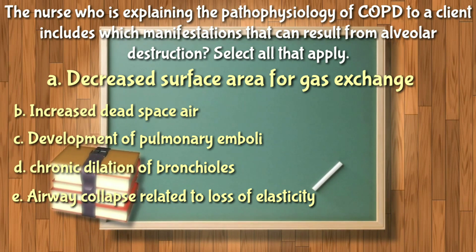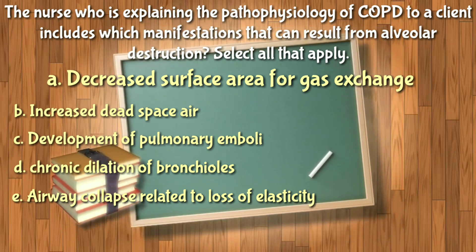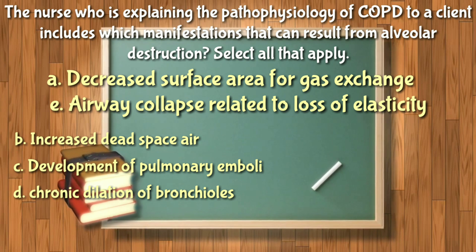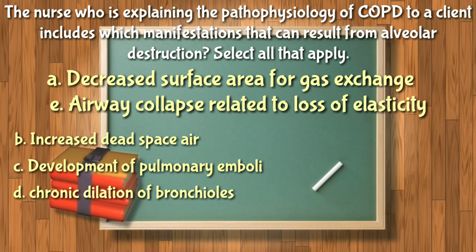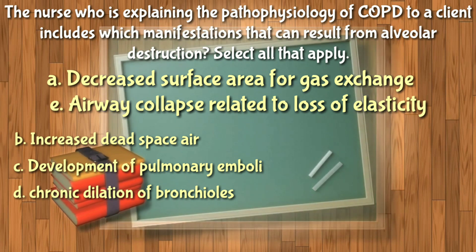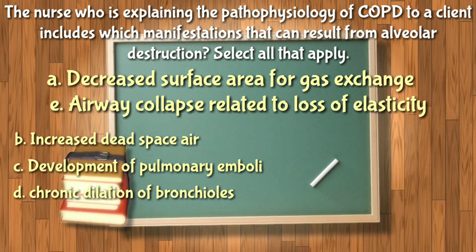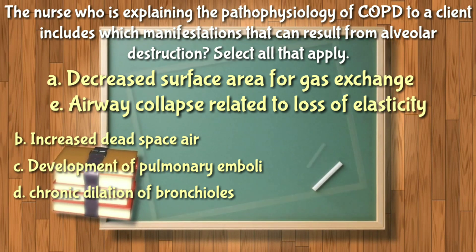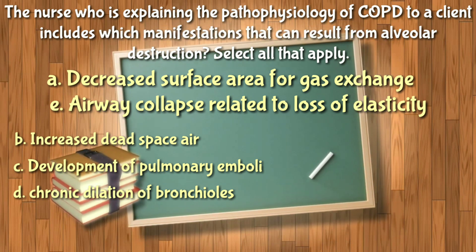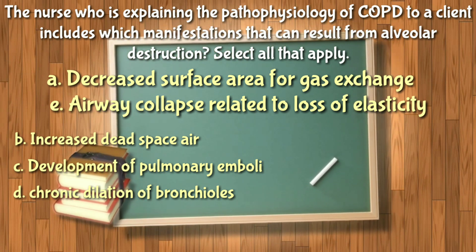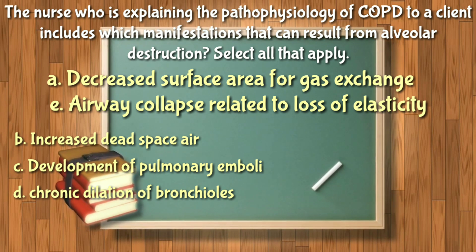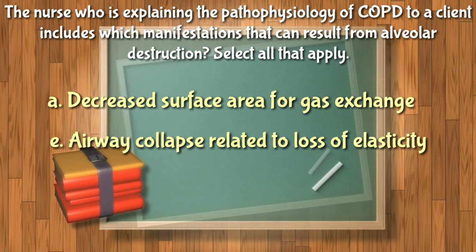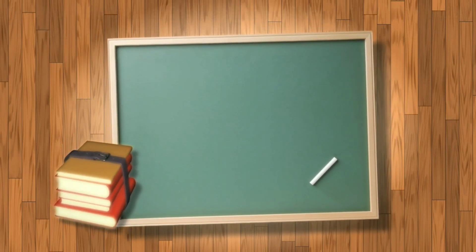Airway collapse can cause alveolar destruction due to over or under inflation of alveolar sacs. Destruction of alveoli is not related to increased dead space, air pulmonary emboli, or chronic dilation of bronchioles — with COPD there is progressive narrowing of bronchioles. So letters B, C, and D are not included. The final answer is letters A and E.